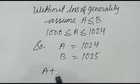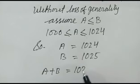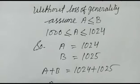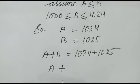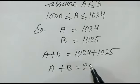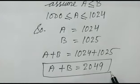So A plus B is equal to 1024 plus 1025, or A plus B is equal to 2049.